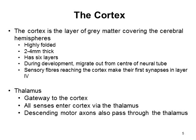The thalamus is a key part of the brain and acts as the gateway to the cortex. All senses enter the cortex via the thalamus, and descending motor axons pass through it on the way down the spinal cord to the effector organs. You may see the thalamus called other names such as the lateral geniculate nucleus or lateral geniculate body. For the purpose of this lecture, we'll stick with thalamus or the LGN.